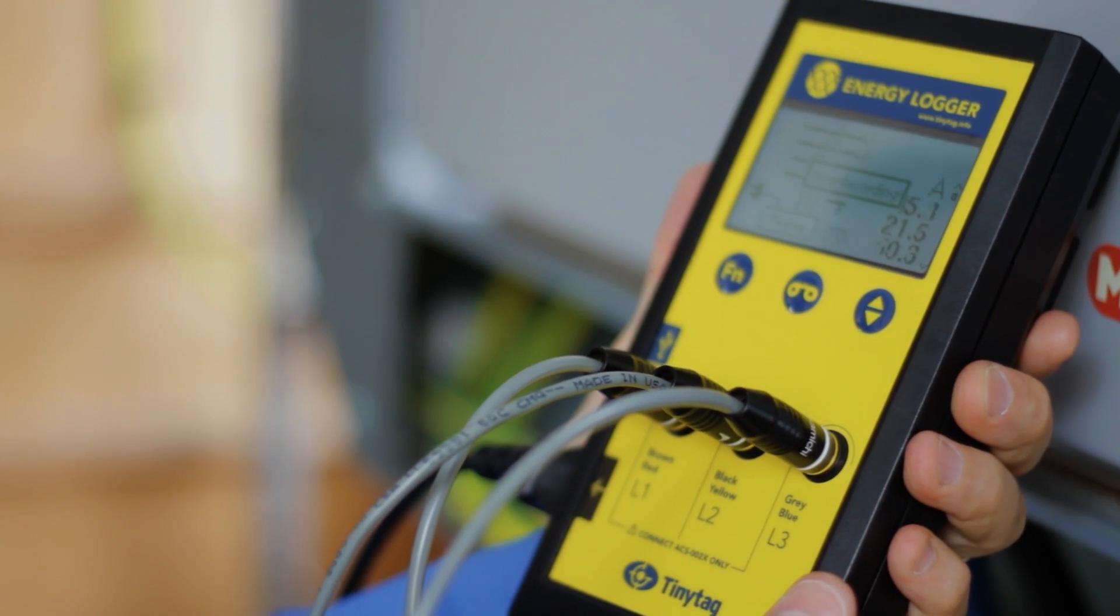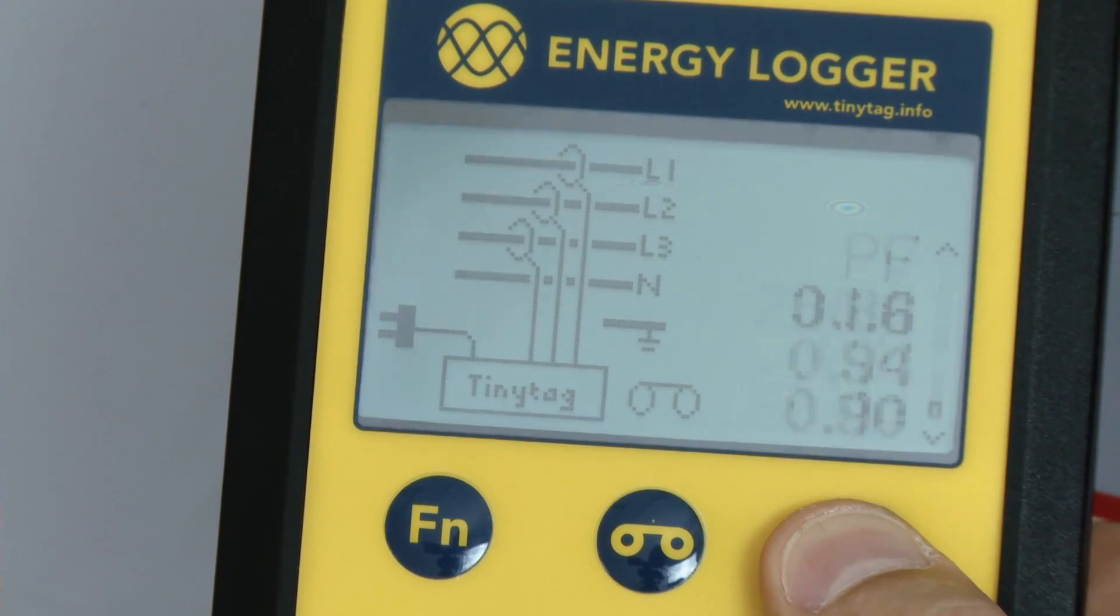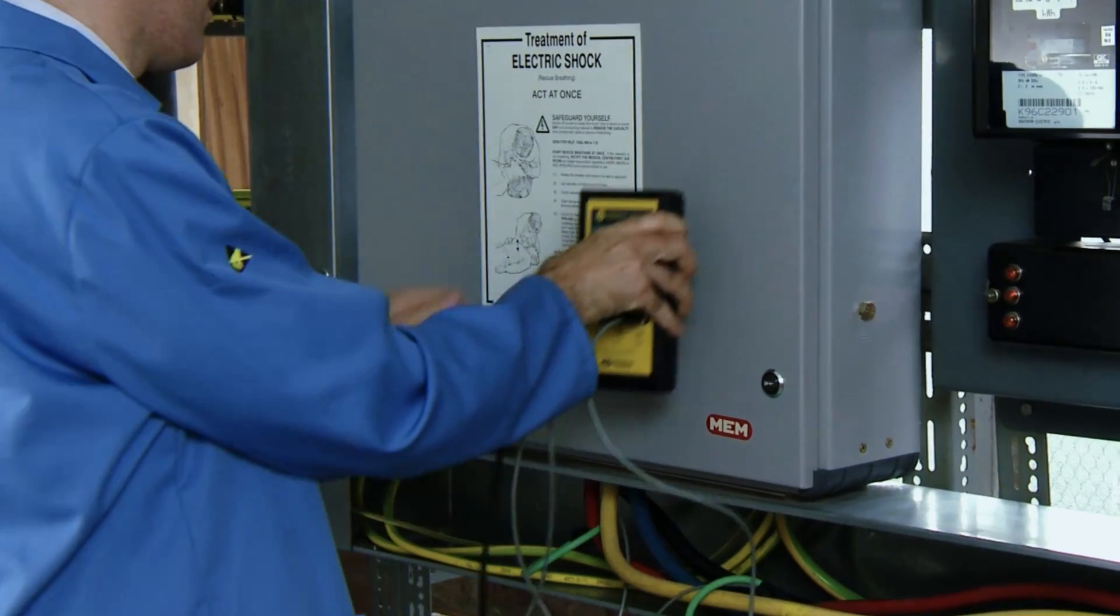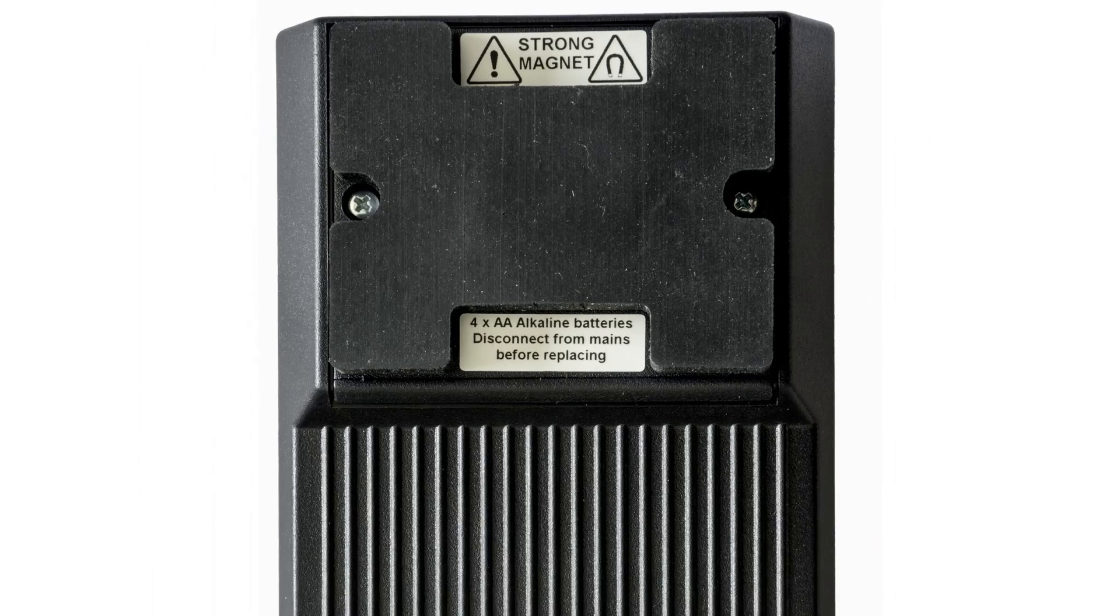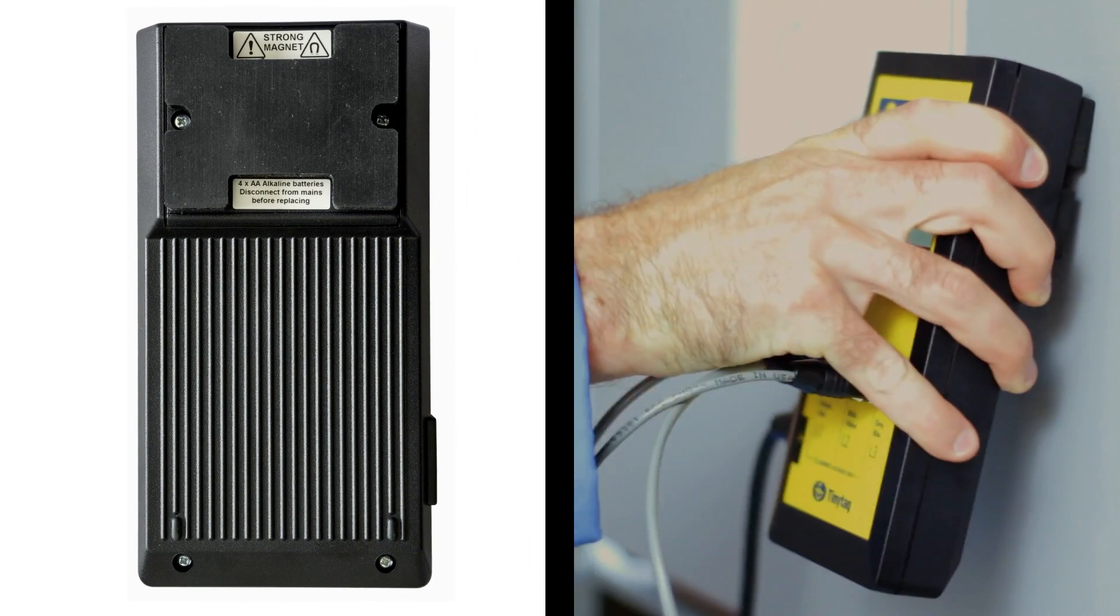At this point, use the up and down arrows to scroll through the various readings on the display. Leave the logger for the desired time period, which will be up to one month on the default settings. This can be extended by changing the logging interval. The logger has an integral magnet so it can be securely attached in a convenient location.